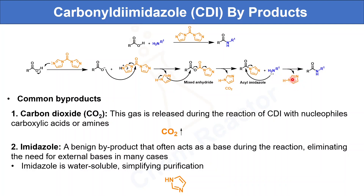By looking at the reaction mechanism, CDI forms two common byproducts: carbon dioxide and imidazole. Carbon dioxide is a gas released during the reaction of CDI with nucleophiles like carboxylic acids and amines. The second byproduct, imidazole, is a benign byproduct that often acts as a base during the reaction, eliminating the need for an external base in many reactions. Since imidazole is very water-soluble, it can be easily removed in aqueous reaction workup. So in total, CDI forms two byproducts — carbon dioxide and imidazole — both of which are easy to manage.